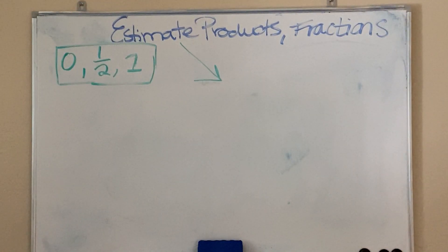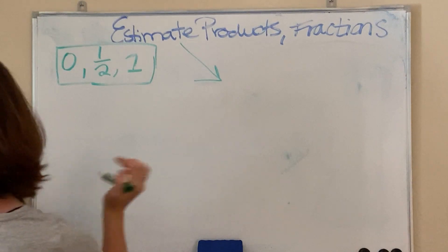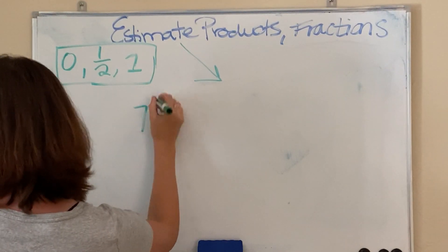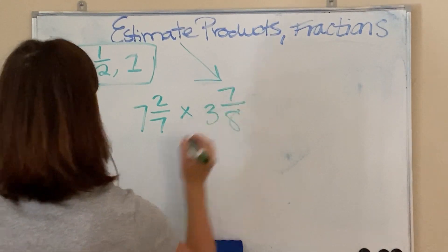Let's say I have the following. What if I have 2 and 2/3 times 3 and 1/6? Actually, let's do this one. Let's say I have 7 and 2/7 times 3 and 7/8.